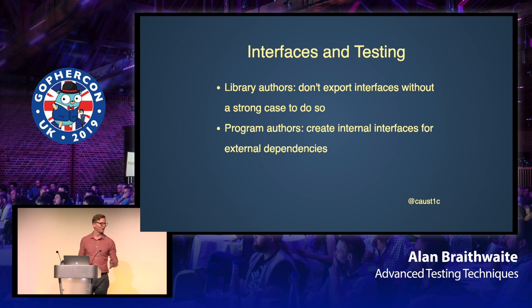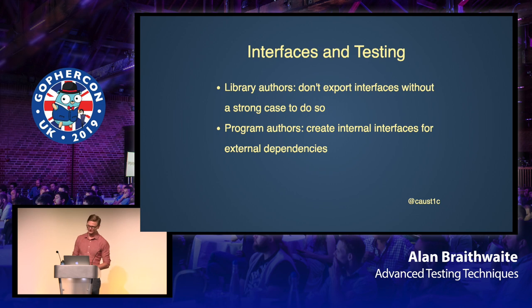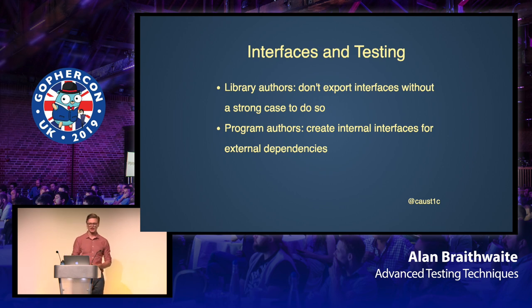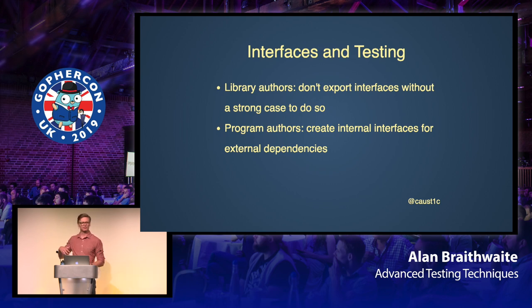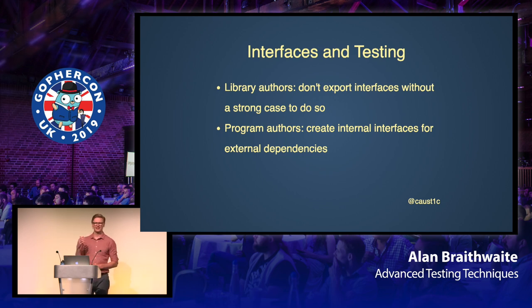A perhaps contentious topic in Go is how best to use interfaces — another one of the most powerful features of the language, but often confusing, especially for people coming from other languages. I'm going to argue that library authors should not export interfaces unless they have a very strong, compelling reason to do so. Conversely, program authors should create internal interfaces to express their external dependencies, so they are free to implement their own stubs and define exactly what they depend on.